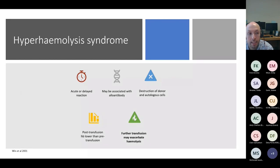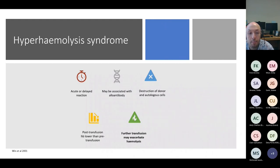Hyperhemolysis is a unique form of hemolytic transfusion reaction in which there is evidence of both donor and autologous red cell destruction. Based on current understanding, it appears to be a spectrum of disease with varying presentations. The reaction can be acute or delayed, there may or may not be antibody detected using current laboratory techniques, and classically the post-transfusion hemoglobin is lower than the pre-transfusion hemoglobin. One of the most difficult problems is that further transfusion may exacerbate the hemolysis.